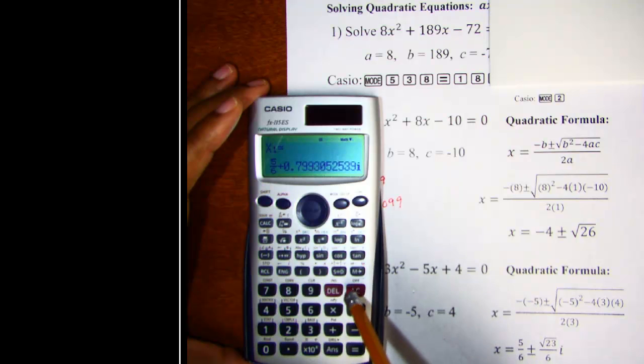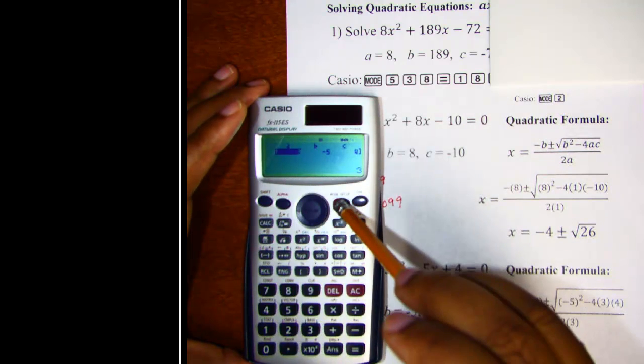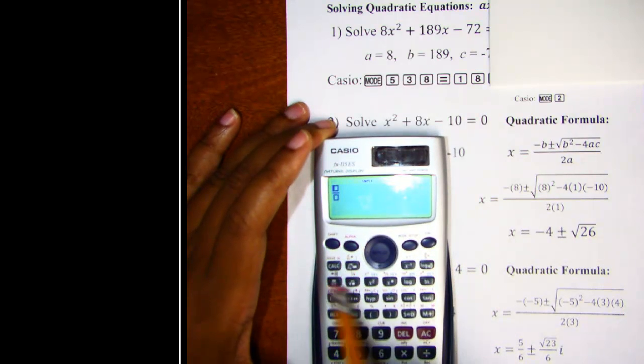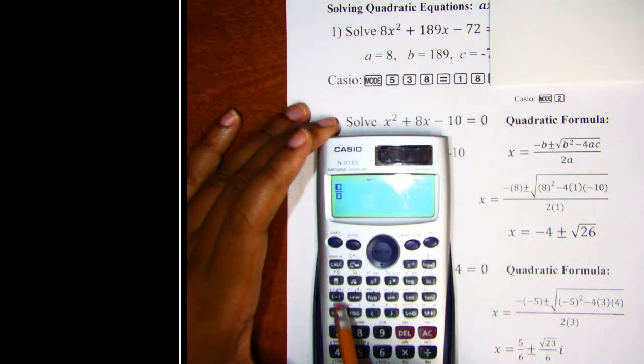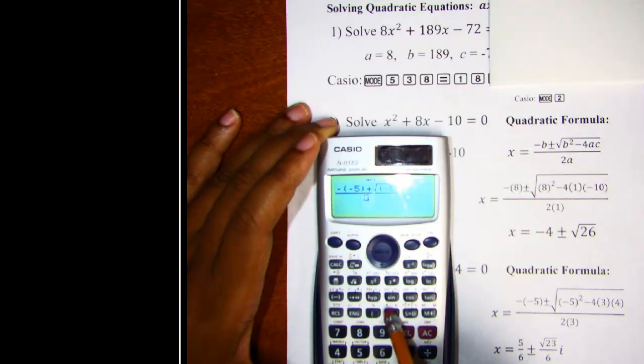All right. So let's see. Let's clear out. And let's go to mode two. That's complex mode. Mode two. All right. And let's enter in what we have written over here. Okay. So enter in your fraction key so that we can enter in this rational expression. And we'll say the opposite of parentheses negative five close parentheses plus square root sign. And then we enter in our negative five squared minus four parentheses three parentheses four move out of the radical drop down to the denominator. And two times three.